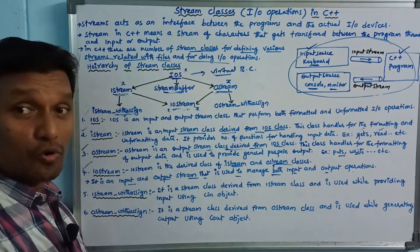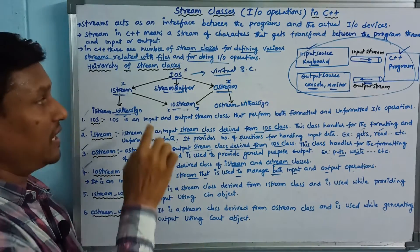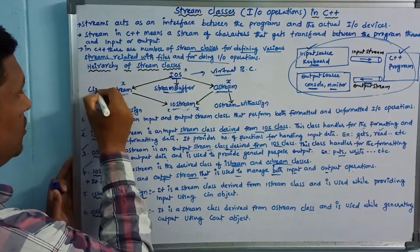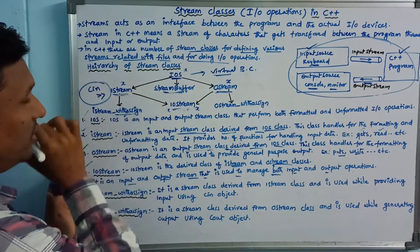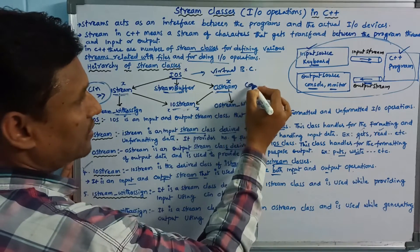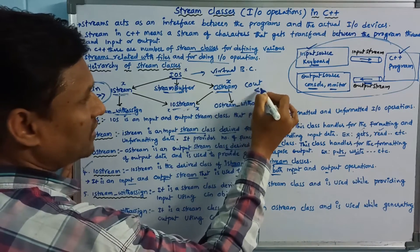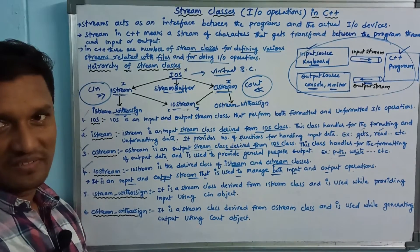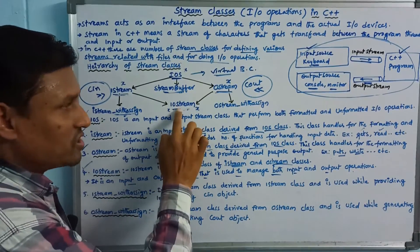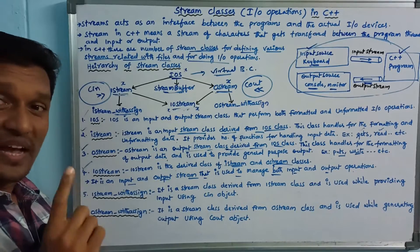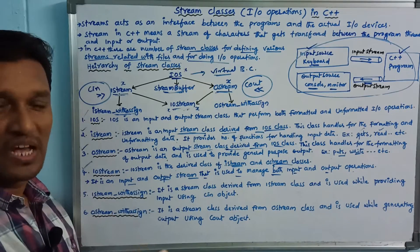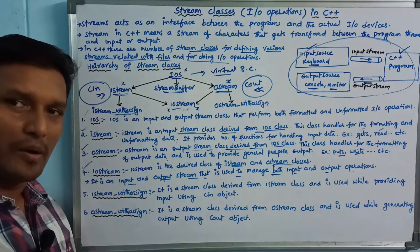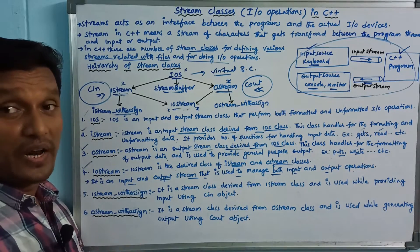Iostream is used with the cin extraction operator and the cout insertion operator. We can use istream with cin and the extraction operator, or cout object with the insertion operator. In istream, we can use iostream.h.